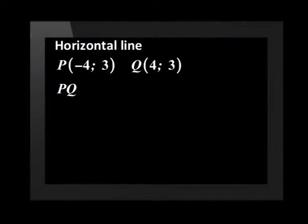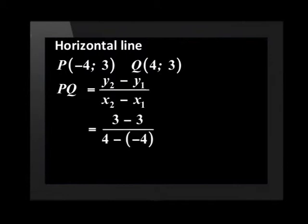The coordinates for point P are (-4, 3). And the coordinates for Q are (4, 3). The gradient for PQ equals y2 minus y1 over x2 minus x1. We substitute the coordinates and get 3 minus 3 over 4 minus negative 4, which is 0.